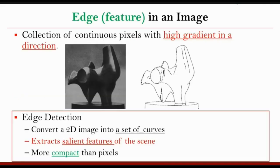In the previous classes, we saw edge detection. Edge detection was also a kind of salient feature because, with the help of edges, we can even recognize objects. Edges can be used to differentiate two classes of objects — for example, differentiating a flower from an aeroplane. So edges are also a kind of feature. We are talking about edges here because we are going to define corner by taking the example of edges — we'll compare edges and corners and see how corners are different from edges.